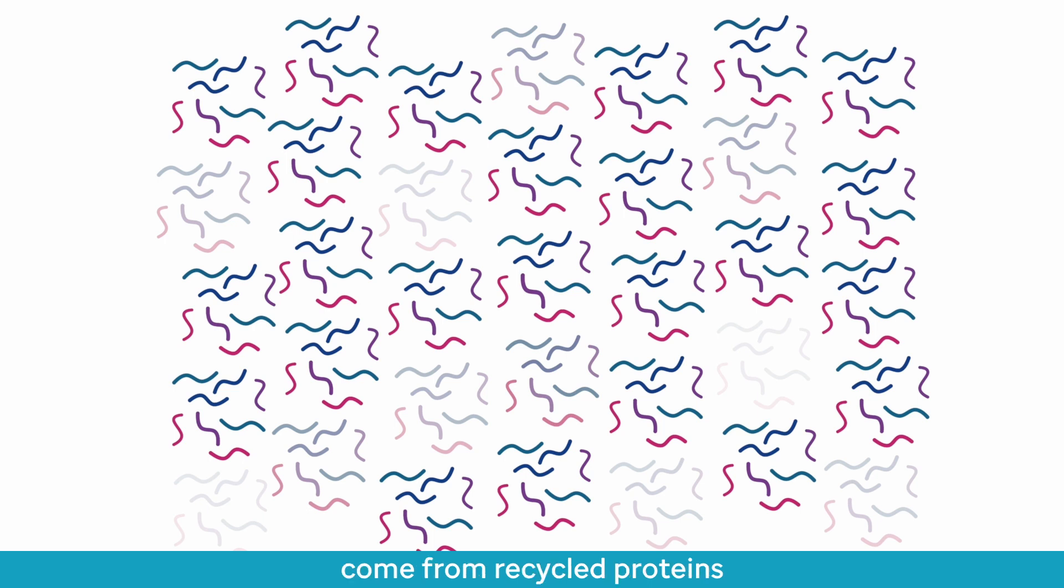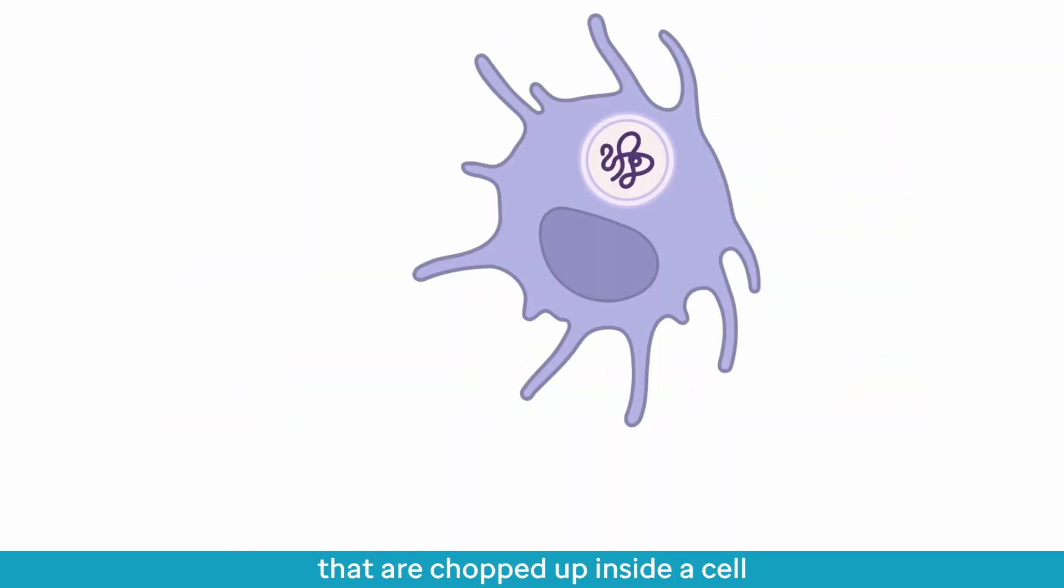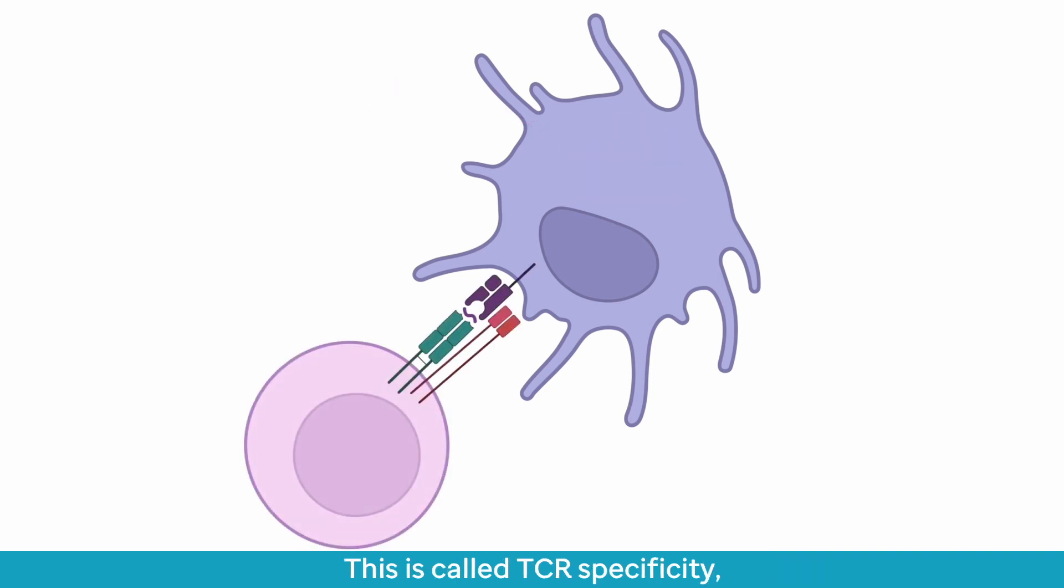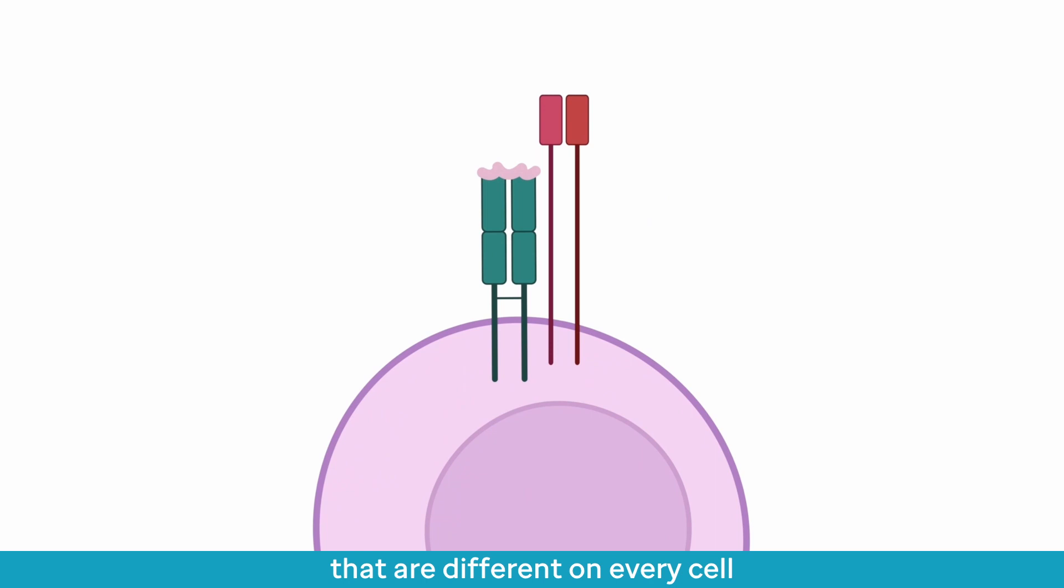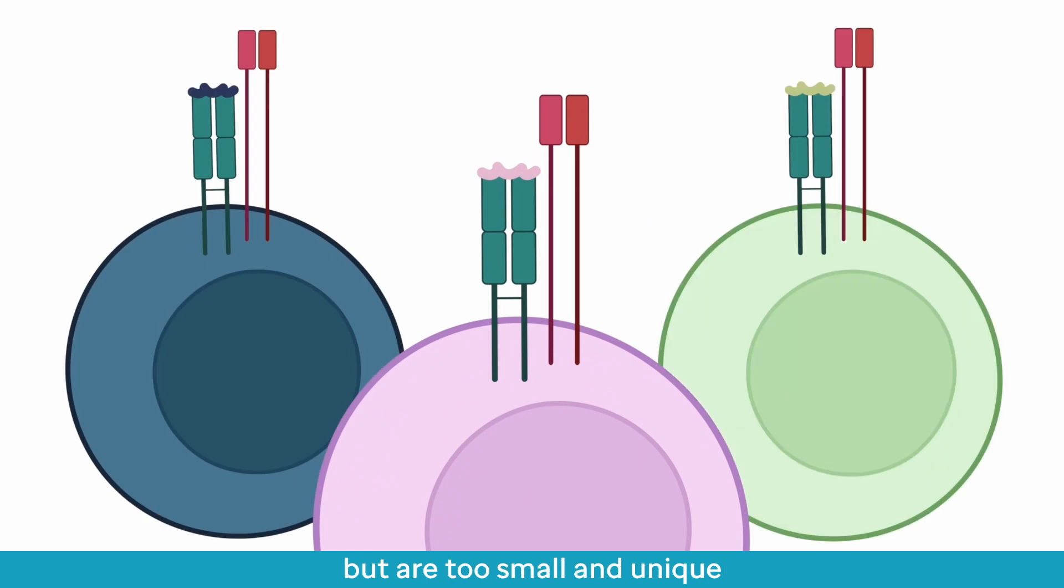These short peptides come from recycled proteins that are chopped up inside the cell and loaded into major histocompatibility complex, or MHC, proteins that bring them to the cell surface where T cells can see them. This is called TCR specificity, and it relies on several small regions within the TCR that are different on every cell but are too small and unique for antibodies to be able to bind.